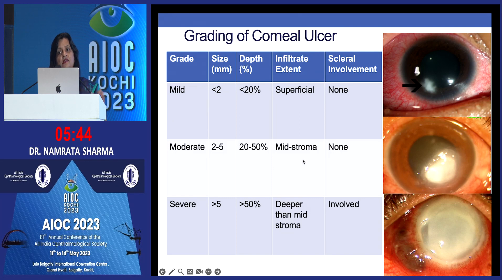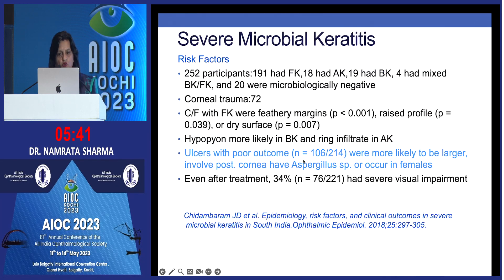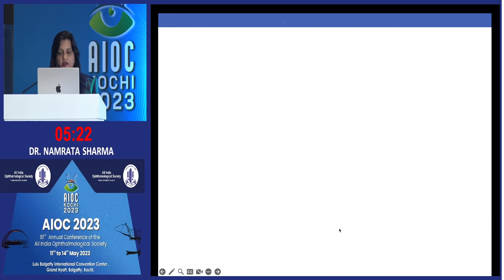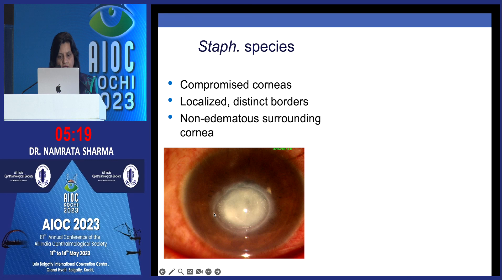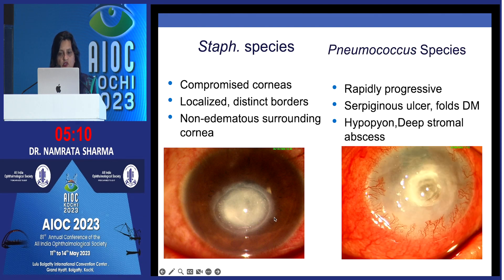The size and depth of the ulcer infiltrate determines what antibiotics you are going to give. Risk factors evaluated for severe microbial keratitis show that ulcers with poor outcome are more likely to be larger, involve posterior cornea, be caused by Aspergillus species, or occur in females — this was a study from South India. Sometimes you can look at the ulcer and predict the organism: a compromised cornea with localized distinct borders and clear surrounding cornea suggests Staph; a rapidly progressive serpiginous ulcer with Descemet membrane folds, hypopyon, and deep stromal abscess with edematous cornea suggests Pneumococcus.